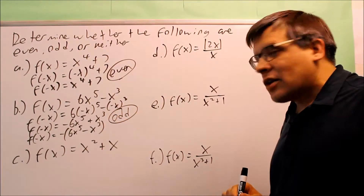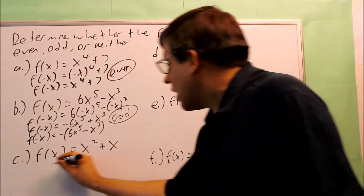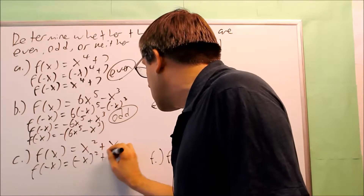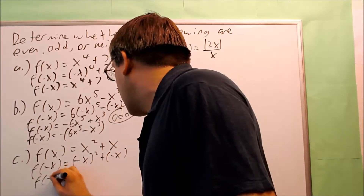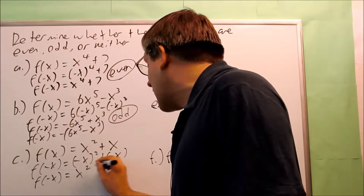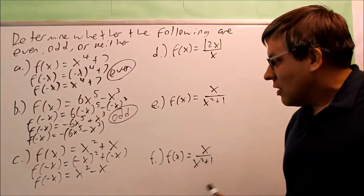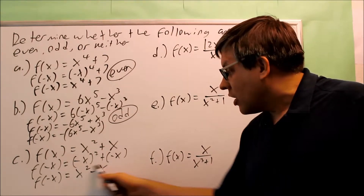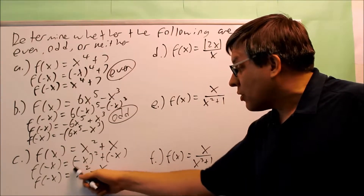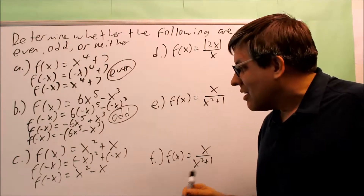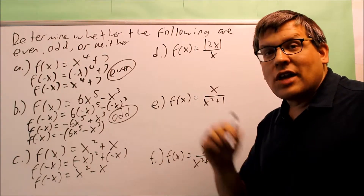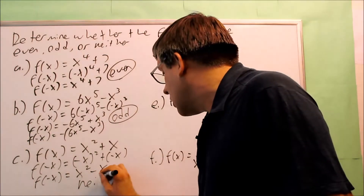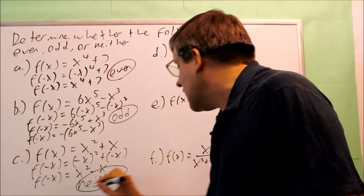Then this one: f of x is x squared plus x. If I put in f of negative x, I get negative x for both x's and simplify. I get positive x squared minus x. That's not the same as the original, and even if I tried to pull out a negative, I would get the signs to switch — I'd end up with a negative in front of x squared. So no matter what, it won't look like negative times f of x either. This one is going to be neither — it's not even and it's not odd.